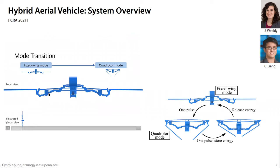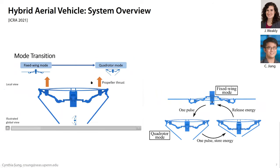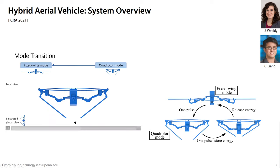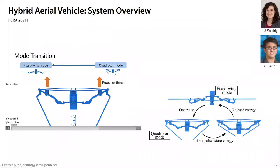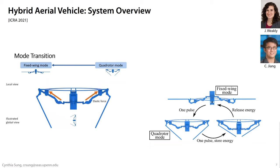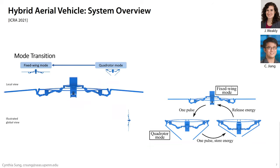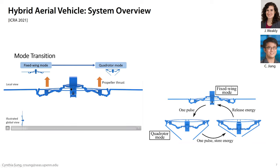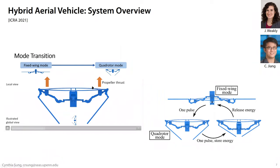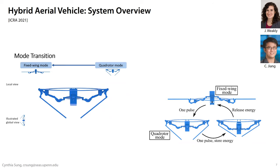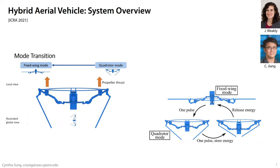Here's our system: a ring where the propellers of a quadrotor are placed, with bars where wings are attached. We wanted to switch between modes without adding any additional actuation — just using the propellers already used for flight. This means we need to take advantage of the vehicle's dynamics to create the switching behavior. We place a mass in the middle of the vehicle and allow the vehicle to accelerate, so that certain types of acceleration trigger the vehicle to switch modes and transition between two different flight modes.